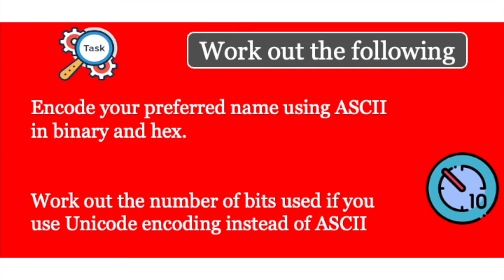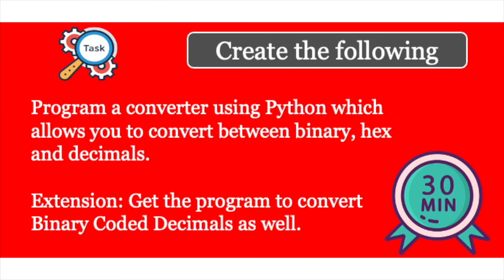Now for a task: encode your preferred name using ASCII in both binary and hex, then count how many bits you've used. Then do the same using Unicode encoding and compare the bit counts to see the difference in file sizes. This shouldn't take more than ten minutes — pause the video and have a go.